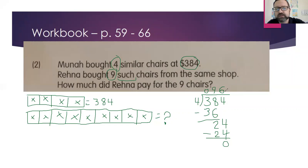So now what do I know? Am I finished yet? No, I am not. Because it says, how much did Rehna pay for the nine chairs? That is a number I don't have yet. But what I do have is 96. I know it costs $96 for one chair. I'm going to write that down here. One chair, we'll just call it CH because it is very difficult to write with this pencil. So one chair costs $96.